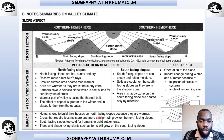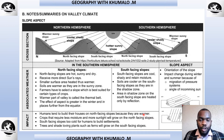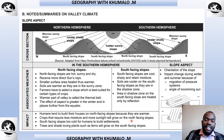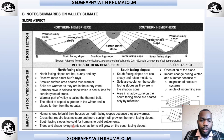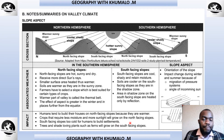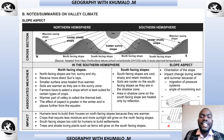Humans tend to build their houses on the north-facing slopes because they are warmer. Crops that require less moisture and more sunlight will grow on the north-facing slope. On the south-facing slope, crops that need more moisture and less sunlight are grown. The south-facing slope is too cold for humans to build settlements. Trees and shade-loving plants such as ferns will grow on the south-facing slope.